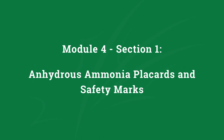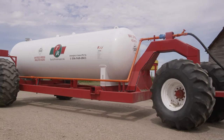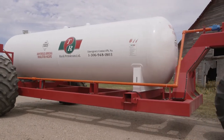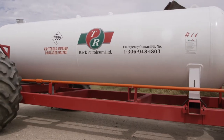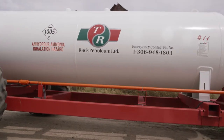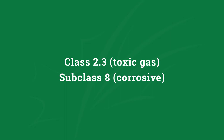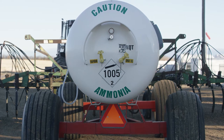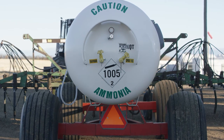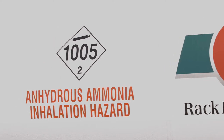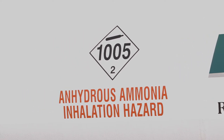This section goes through a step-by-step process of how to safely respond to an agricultural anhydrous ammonia incident. Anhydrous ammonia is classified by Transport Canada as a dangerous good regulated under the Transportation of Dangerous Goods Act and Regulations when transported by rail, ship, and road. Its classification is class 2.3, subclass 8, meaning it's a compressed gas with toxic and corrosive properties. The UN number is 1005. As a class 2.3, anhydrous ammonia is a toxic inhalation hazard, or TIH.